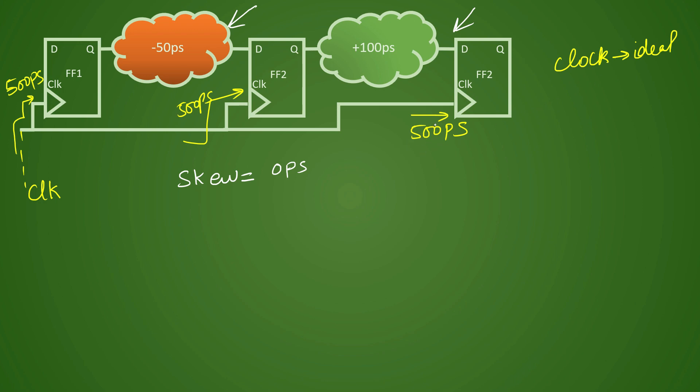So in this case what we can do is if you see that this latency is 500 picoseconds, what we can do is if we insert a buffer or somehow if we try to create this latency more, let's say if we pushed this latency by plus 50 picoseconds.